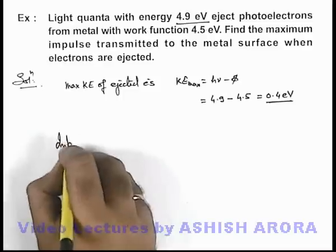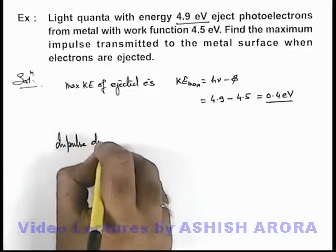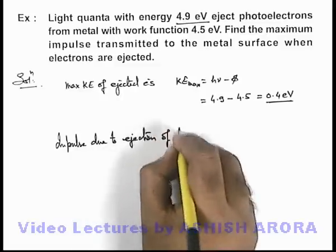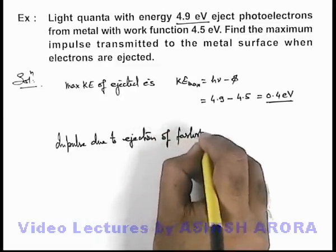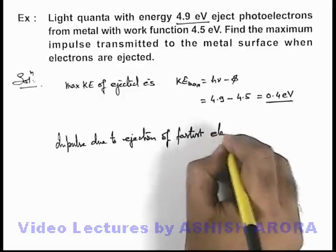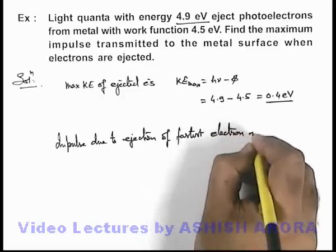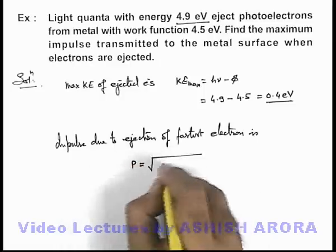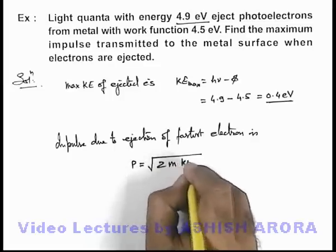Or directly we can calculate impulse due to ejection of fastest photoelectron. That is, the momentum supplied can be written as root 2 m KE max.